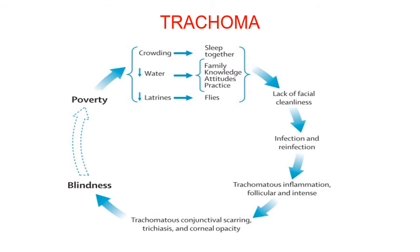This is a vicious cycle: crowding, scarcity of water and latrines, and increased flies lead to poor facial cleanliness, infection and reinfection, trachomatous follicular inflammation, conjunctival scarring, trichiasis, corneal opacity, and blindness. Blindness leads to poverty, which in turn leads to inability to maintain hygiene, causing further infections. The community or family can thus be trapped in a cycle of blindness and poverty.